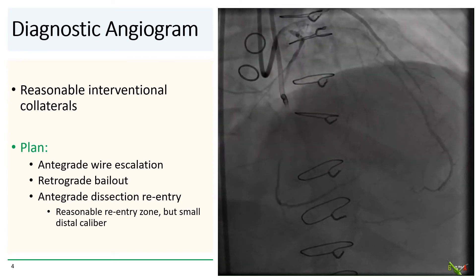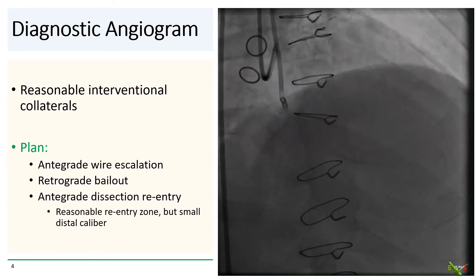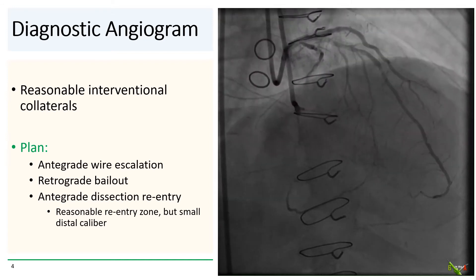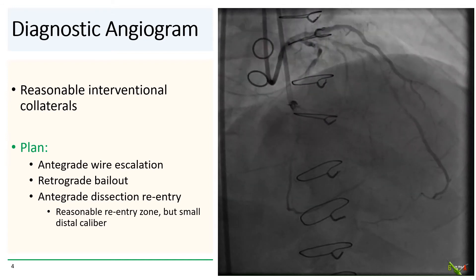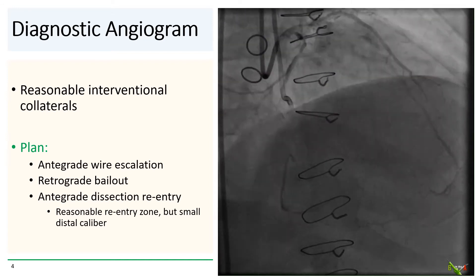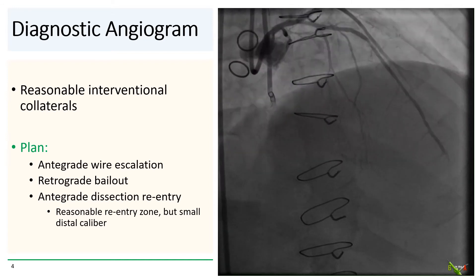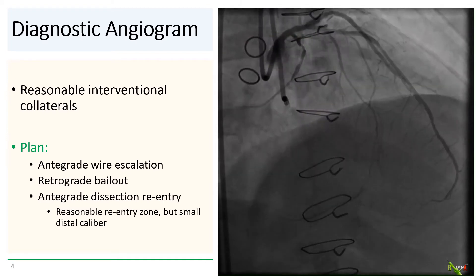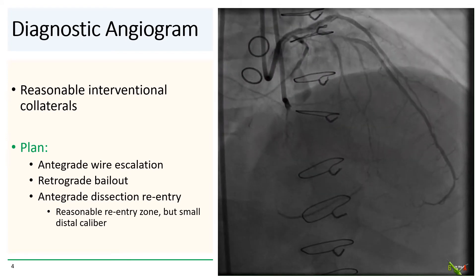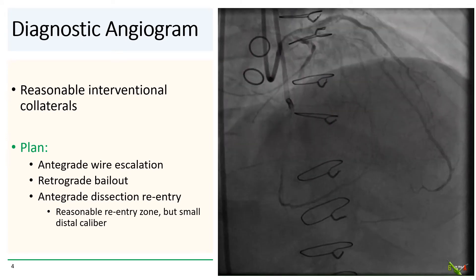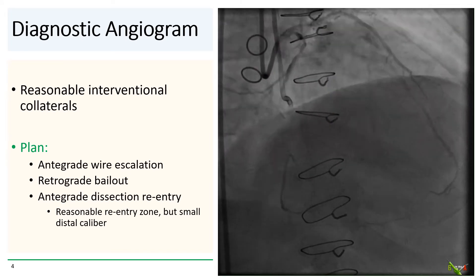For this case, antegrade dissection re-entry was thought to be less ideal. The potential re-entry zone was reasonably long, but the small caliber of the distal vessel made the target small.